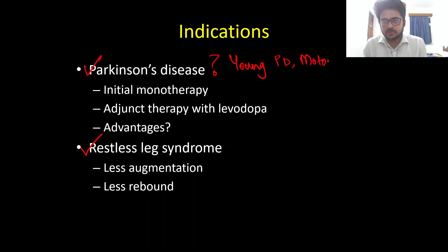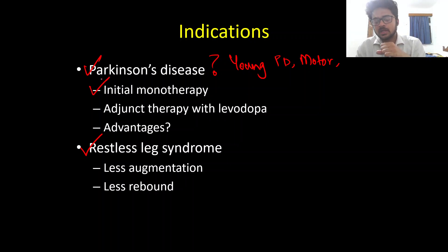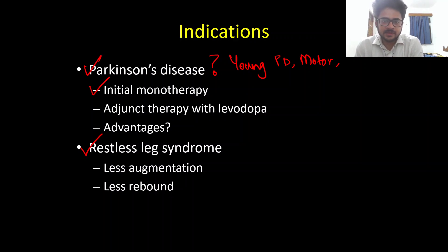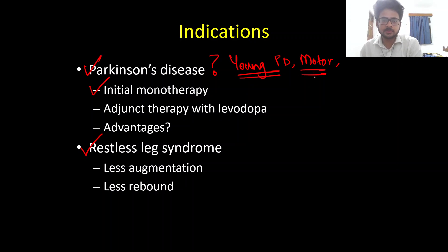If you have a young Parkinson's patient with motor symptoms that are not significantly affecting day-to-day activities, ropinirole can be used as initial monotherapy. The reason we prefer a dopamine agonist as monotherapy in young patients is that if we start them on levodopa early, the onset of motor fluctuations and dyskinesias associated with levodopa comes much earlier. So it is wise to start with a dopamine agonist before adding levodopa.